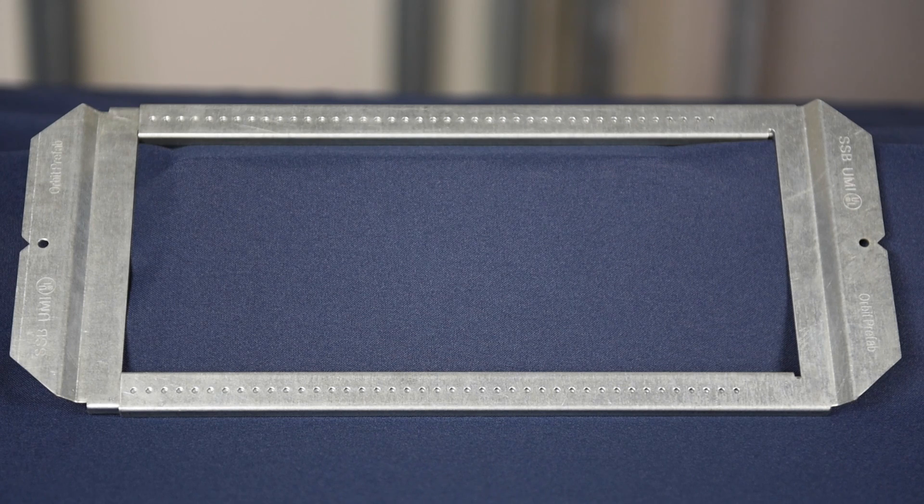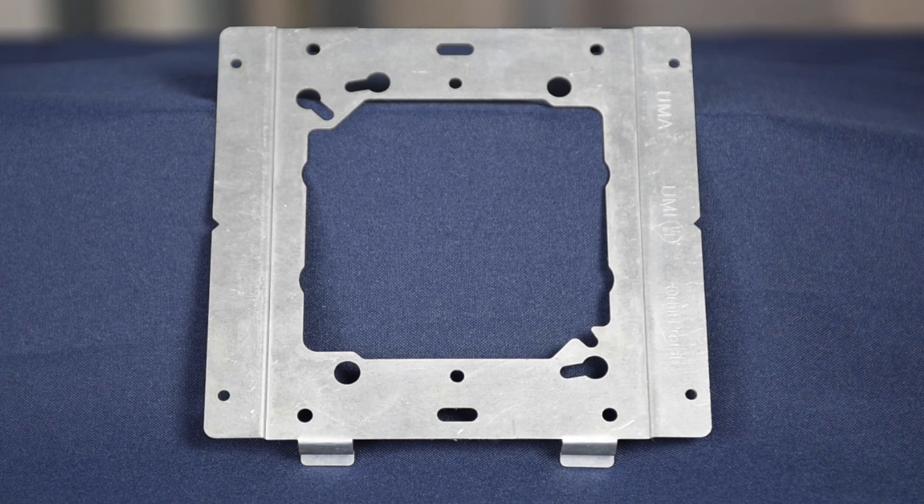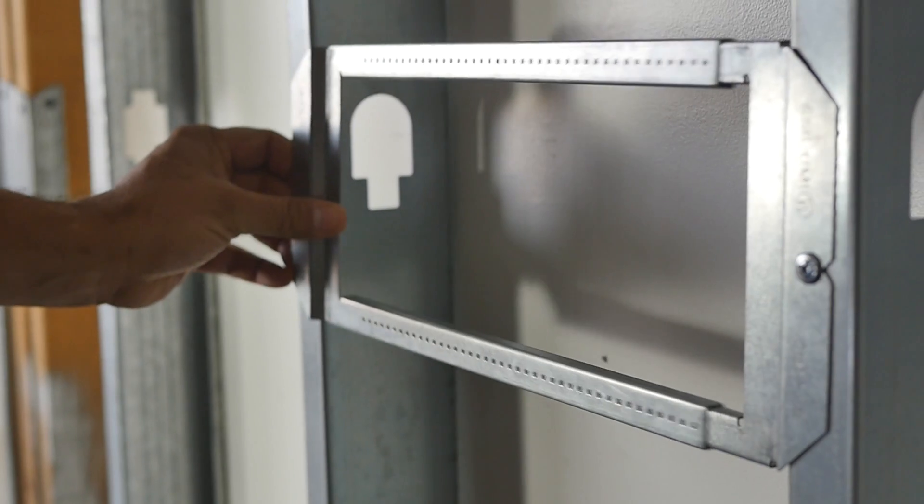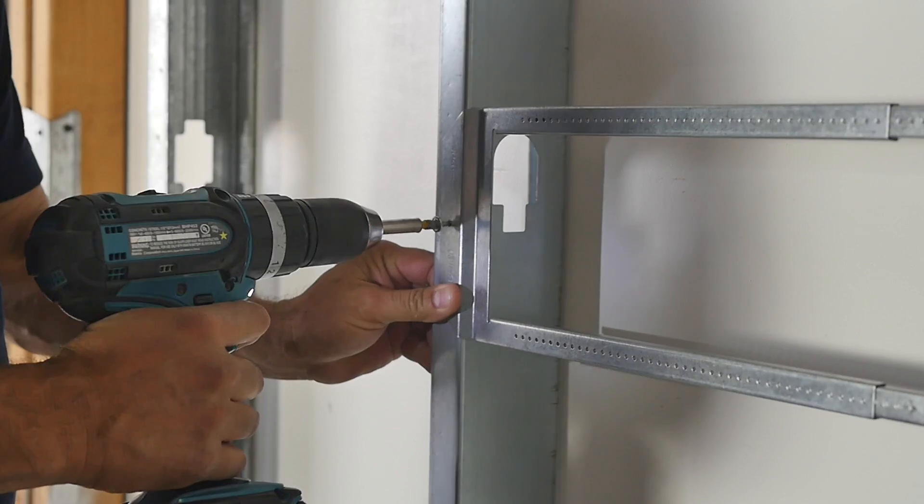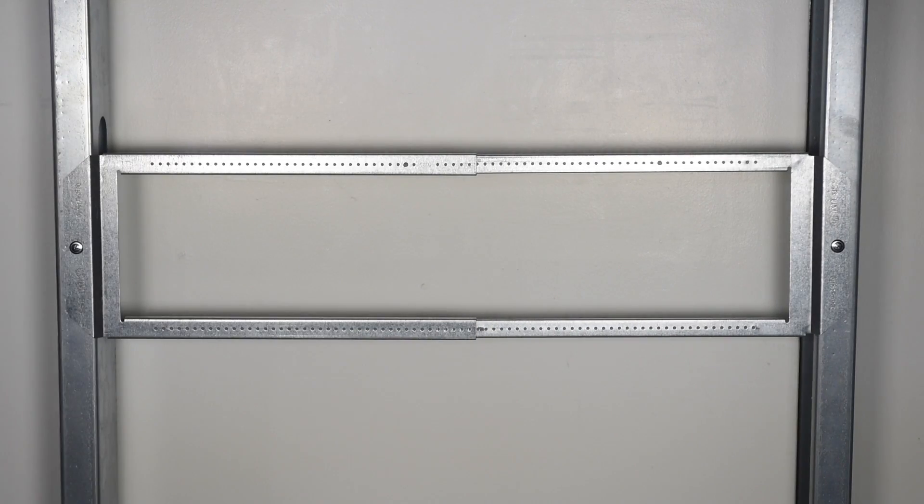These two exclusive prefab products work to save time and labor when installing junction boxes between wood and metal studs. The SSB is a telescoping bracket that provides versatility, efficiency, and reliability both on and off the job site.